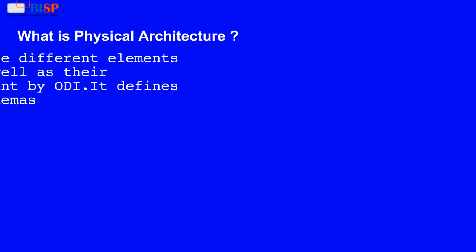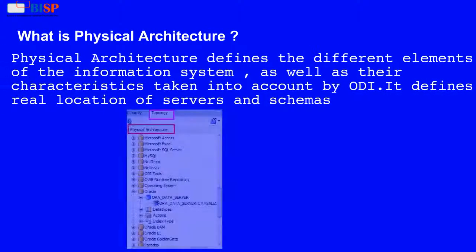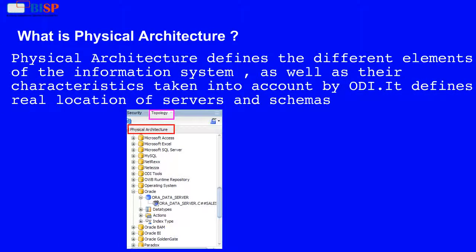What is physical architecture? Physical architecture defines the different elements of the information system, as well as their characteristics taken into account by ODI. It defines the real location of servers and schemas.